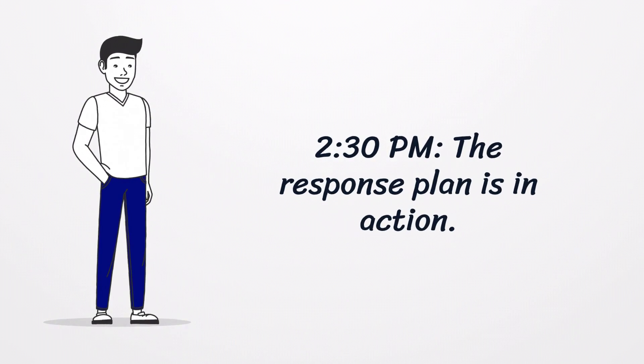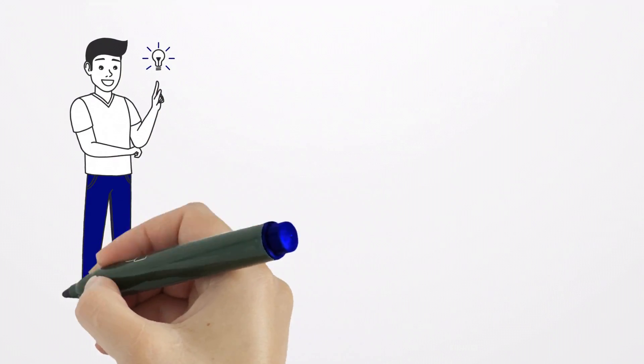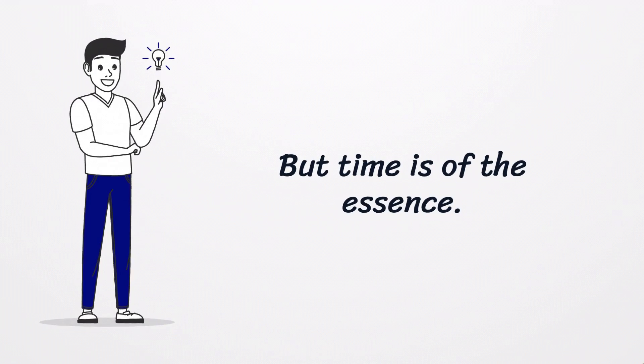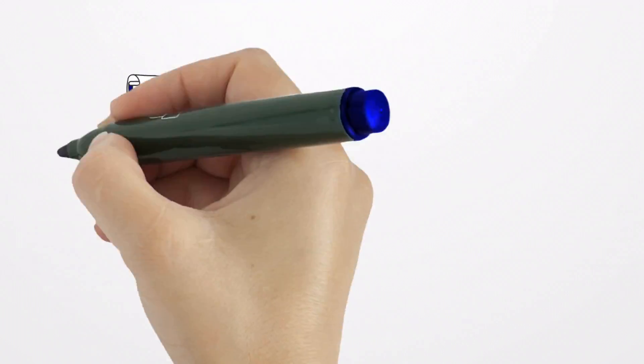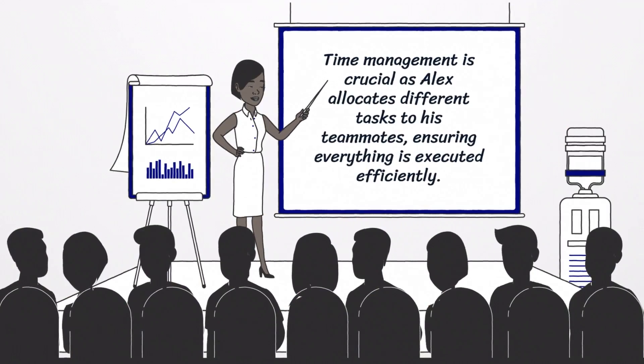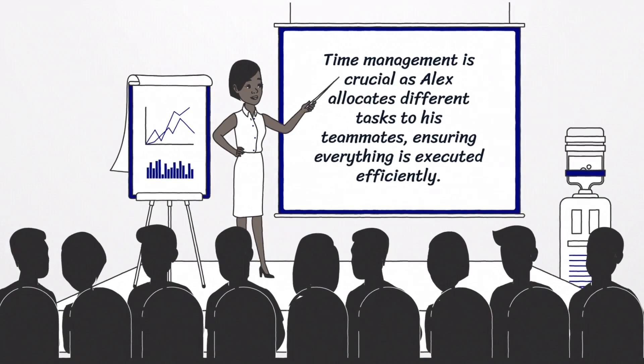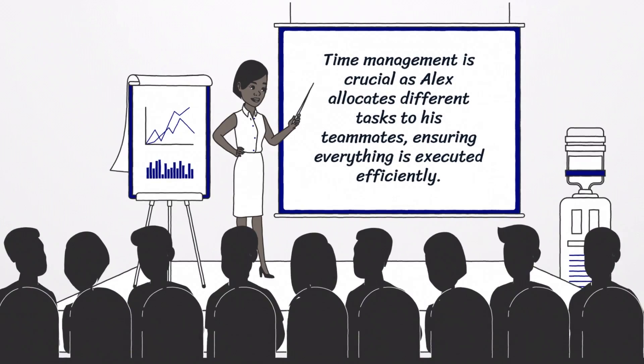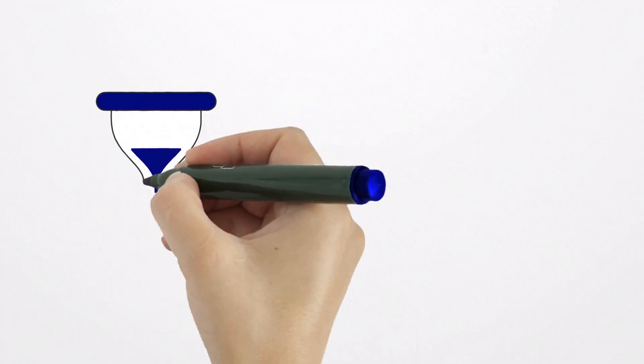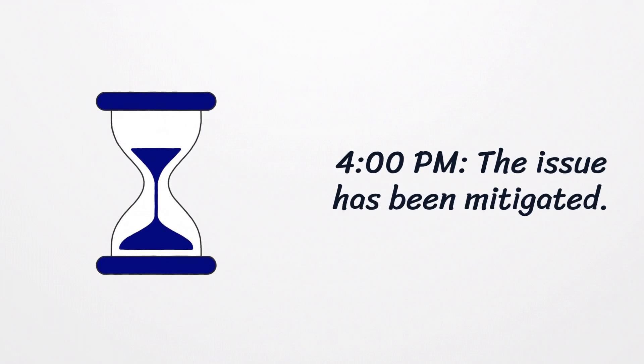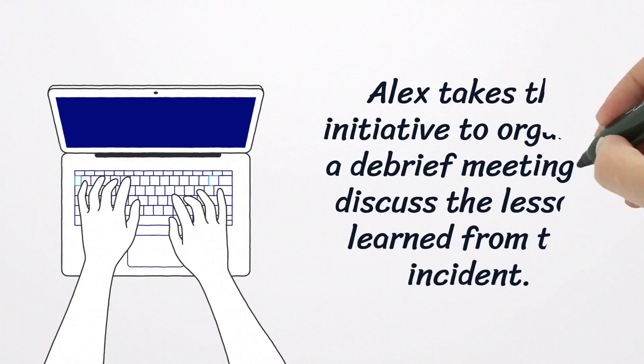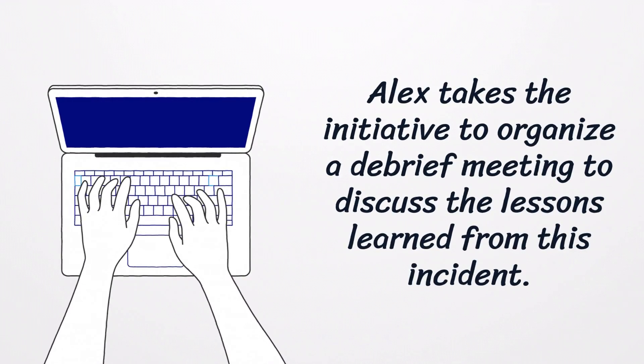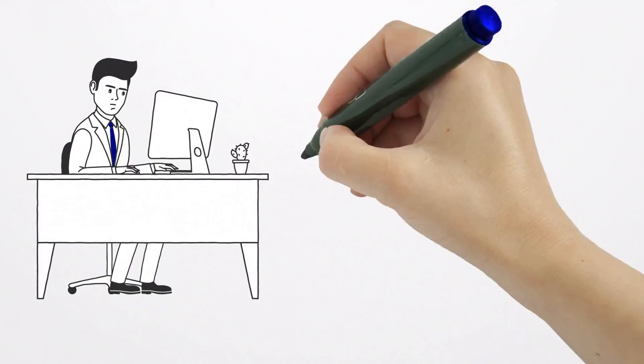2:30 PM - The response plan is in action, but time is of the essence. Time management is crucial as Alex allocates different tasks to his teammates, ensuring everything is executed efficiently. 4:00 PM - The issue has been mitigated. Alex takes the initiative to organize a debrief meeting to discuss the lessons learned from this incident.